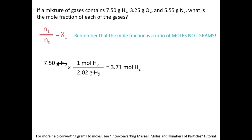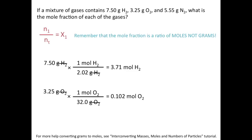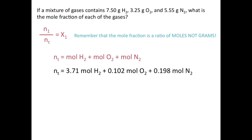Converting 7.5 grams of H2 using its molar mass gives us 3.71 moles of H2. We do the same for oxygen, converting using the molar mass of O2, which gives us 0.102 moles of O2. And for nitrogen, using the molar mass of N2, we find that 5.55 grams of N2 equals 0.198 moles of N2. Now that we have the moles of each individual gas, we add them together to get the total number of moles: N sub T is equal to 4.01.